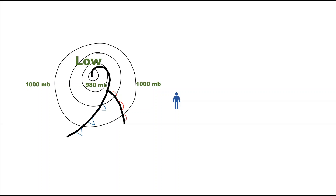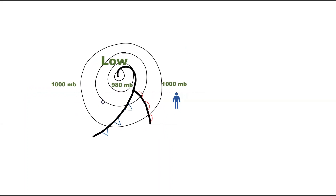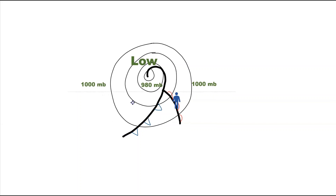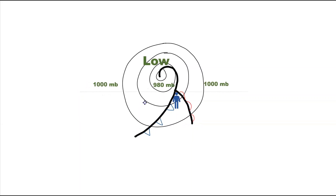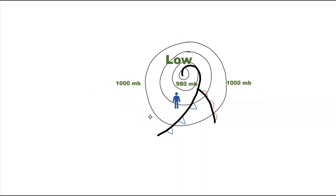The last aspect of weather to look at as the depression passes over is pressure. A depression is a low pressure system, meaning pressure is lowest at the centre. As you move away from the centre, pressure gets higher. Imagine you are standing still as the depression moves overhead — you start at about 1000 millibars, but as the centre gets closer, pressure drops towards about 980 millibars, and then as the depression moves away, pressure rises again.